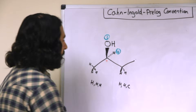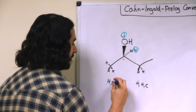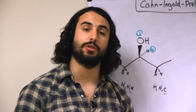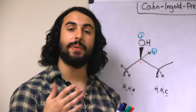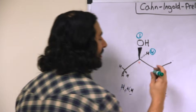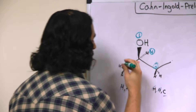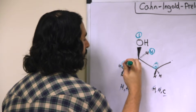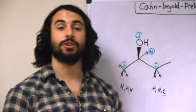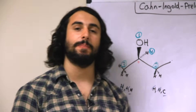One way to look at it is as though these hydrogens cancel these hydrogens, and then we're pitting a carbon atom versus a hydrogen atom. Because carbon is heavier than hydrogen, that means this carbon is going to get priority two over the other one, which will now be priority three.